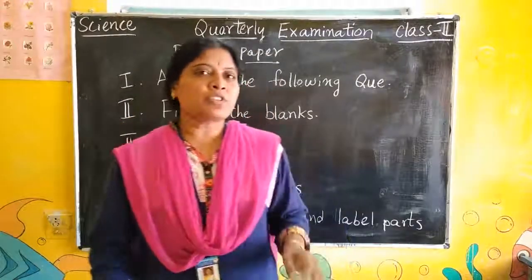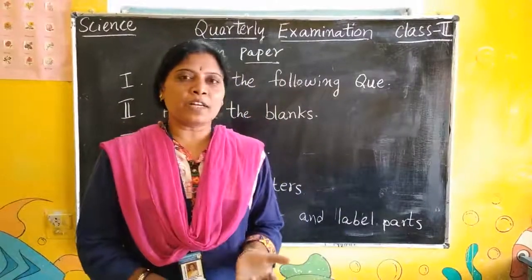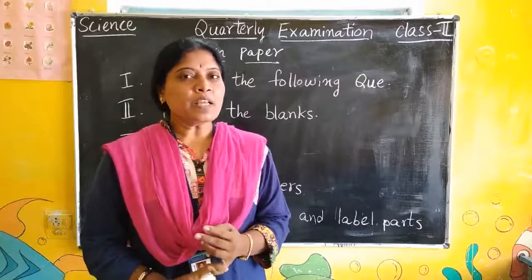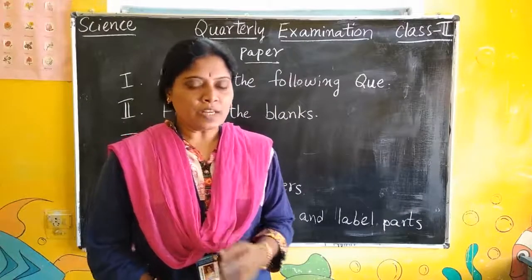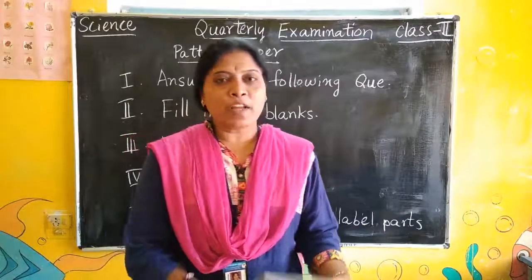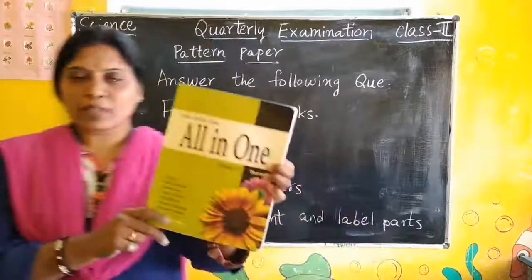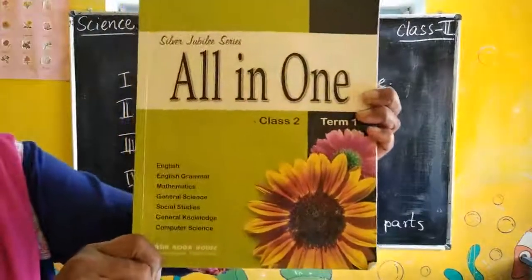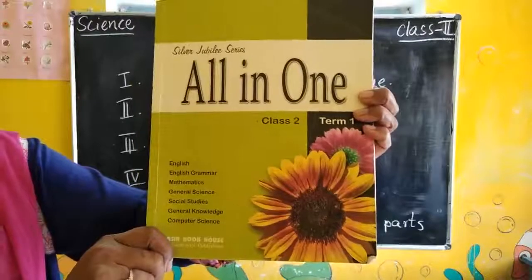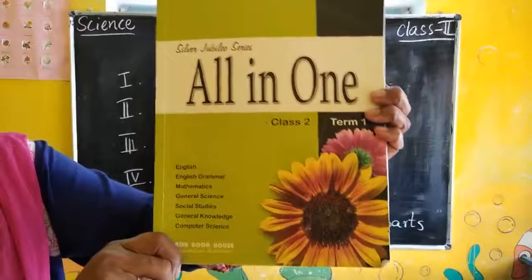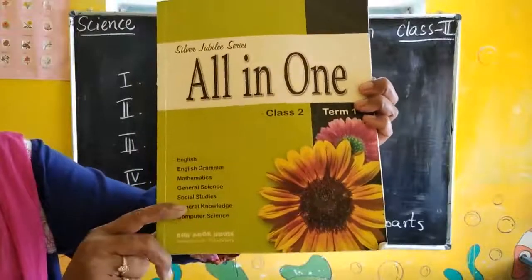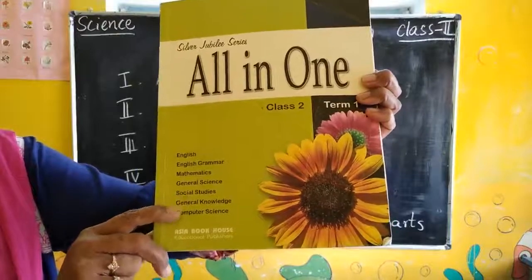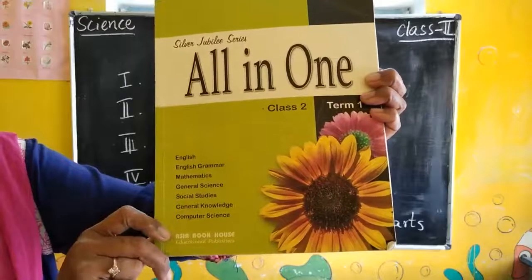The portion is whatever children have learnt over these 3 months. This is the portion and this is our term 1 book. Some parents are asking how the term 1 book looks — this is the term 1 all-in-one textbook. In this book we have English, Math, Science, and Social.